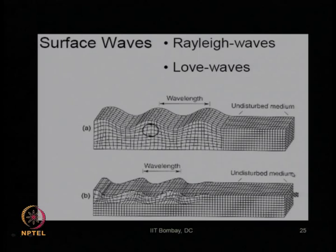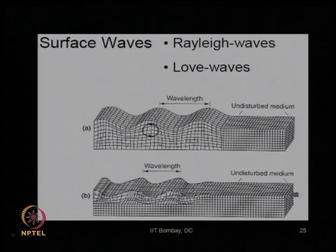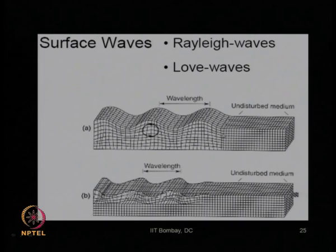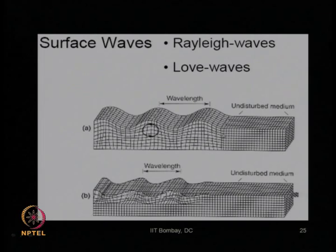For surface waves — Rayleigh waves and Love waves — Rayleigh waves produce a rotary motion. This shows the undisturbed and disturbed media as waves pass through, creating particle movement in a particular fashion relative to the direction of wave propagation. Now let us discuss the derivations for various types of waves as they travel through a particular medium, starting with the simplest case of waves in unbounded media.